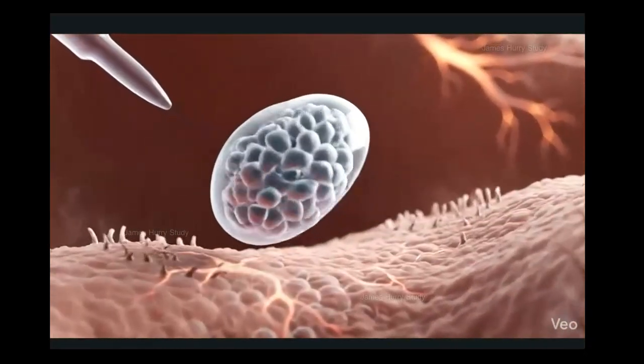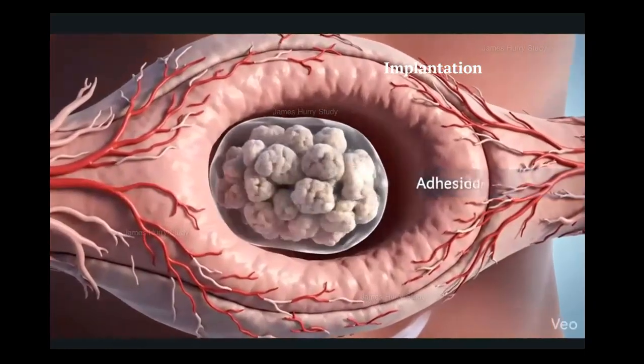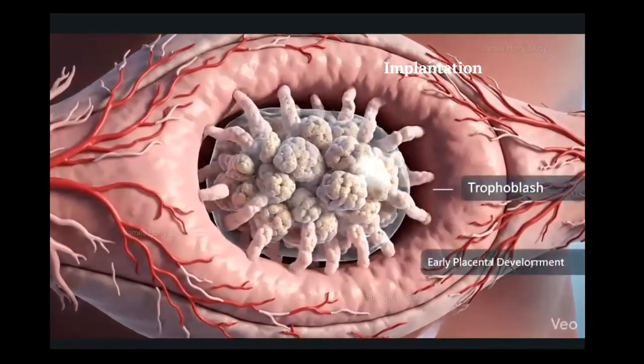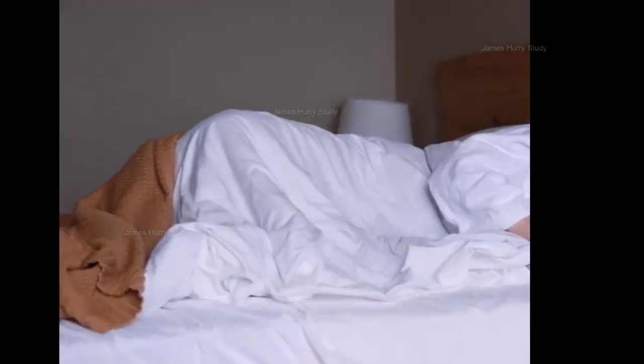If embryo transfer is successful, the blastocyst gently attaches to the richly vascularized uterine lining, and this initiates the process of implantation. The procedure is typically painless, and after the transfer, the patient may rest briefly, normally about an hour or so before going home.